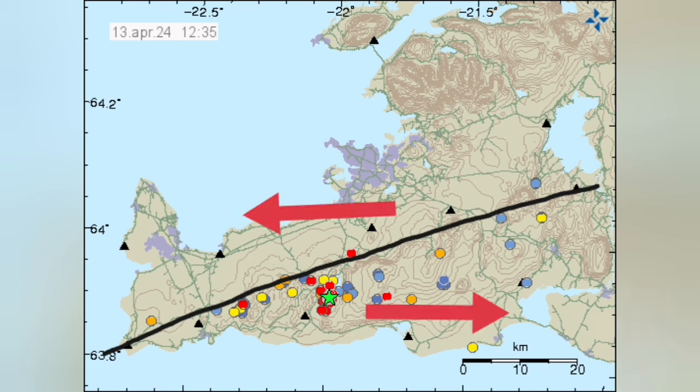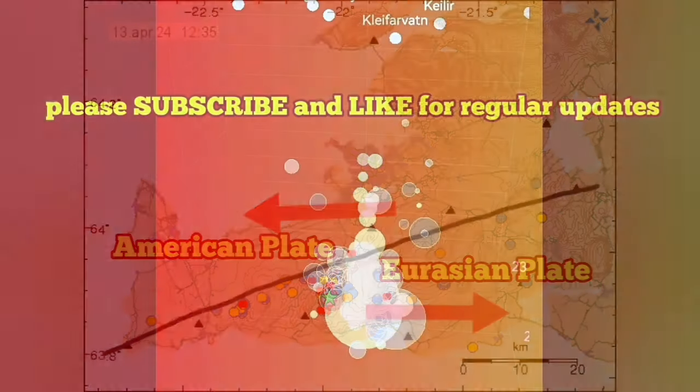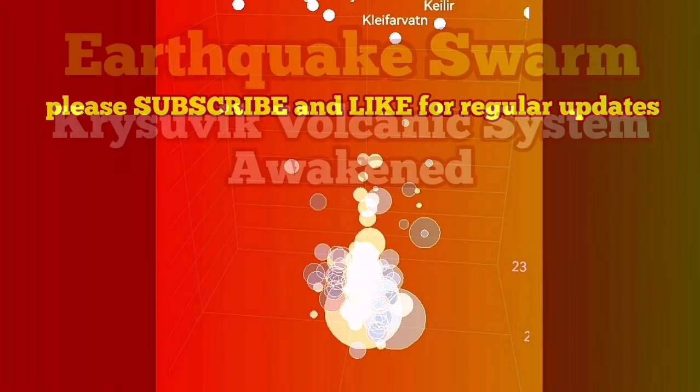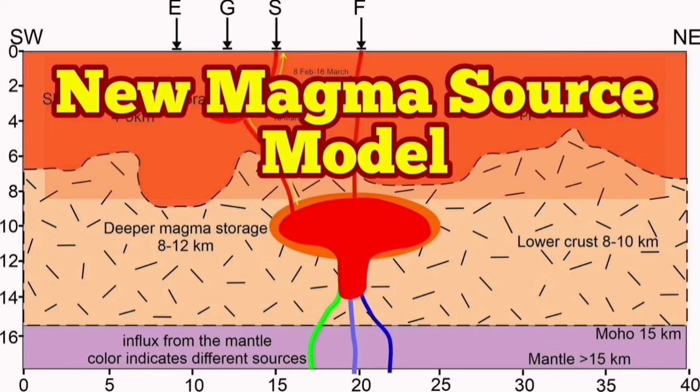The Reykjanes Peninsula epicenter is marked by a star. This is where the boundary between the Eurasian Plate and the North American Plate are located. This seems to be showing something like magma movement.